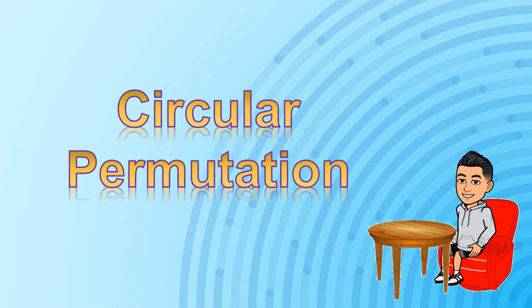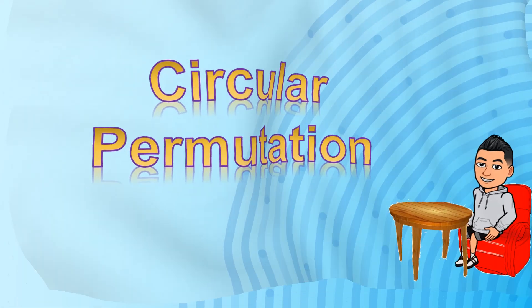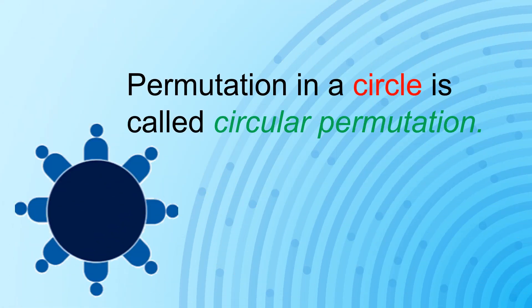Today we will be talking about circular permutation. The permutation of objects arranged in a circle is called circular permutation. The question is, why is there a need for us to have a different permutation if every data arrangement is in circular form?